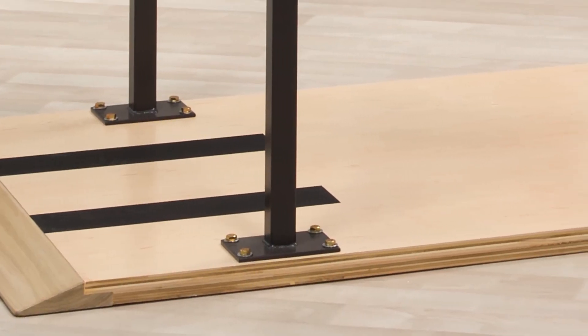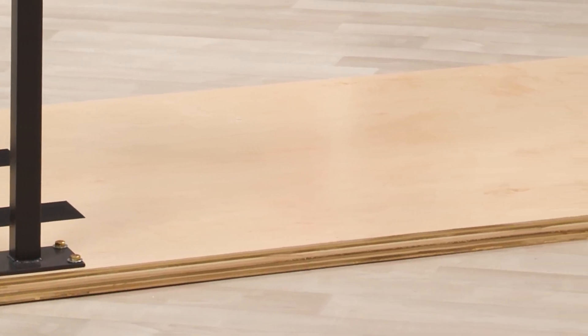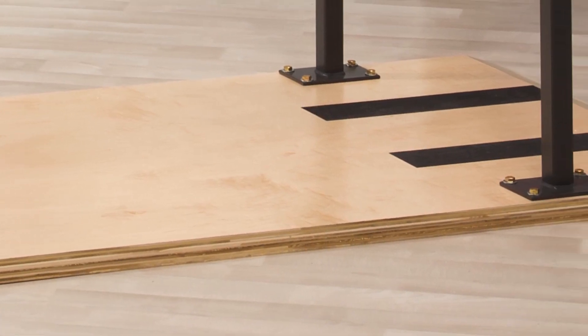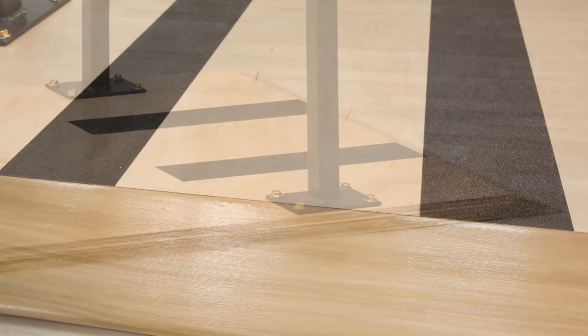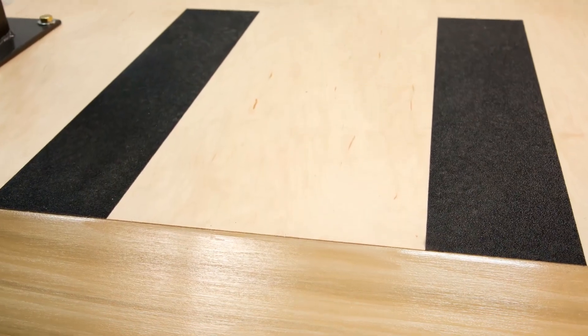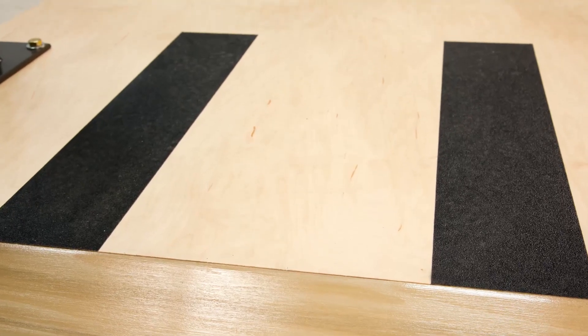We start with platforms made from one and a half inch hardwood plywood. We topcoat it with an ultra durable UV cured satin finish and add safety tread at both ends so patients don't slip when starting or stopping.